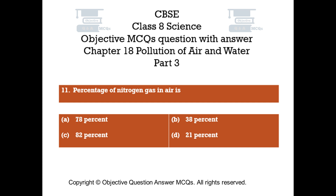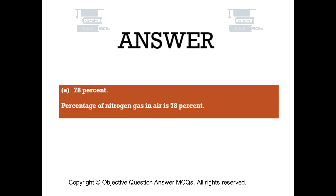Question number 11: Percentage of nitrogen gas in air is — Option A: 78%, Option B: 38%, Option C: 82%, Option D: 21%. The right answer is Option A: 78%. The percentage of nitrogen gas in air is 78%.